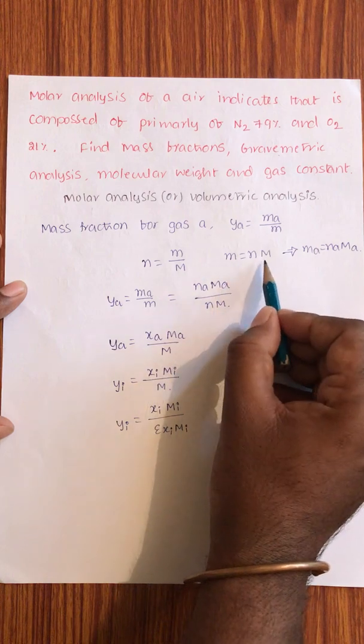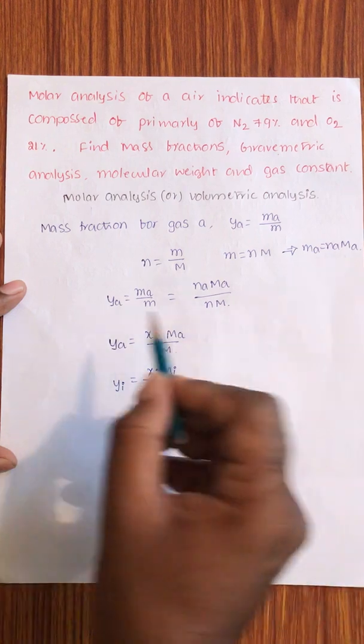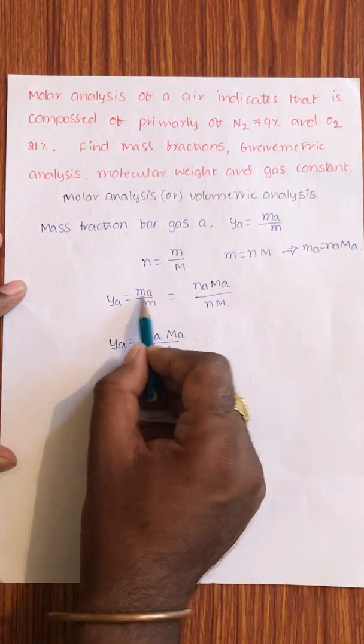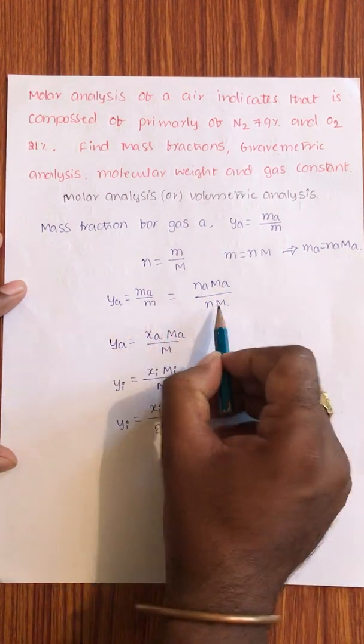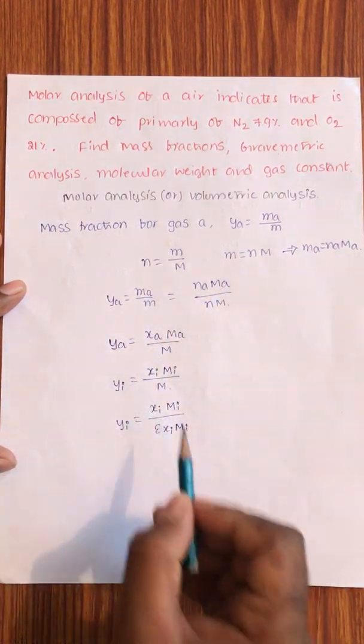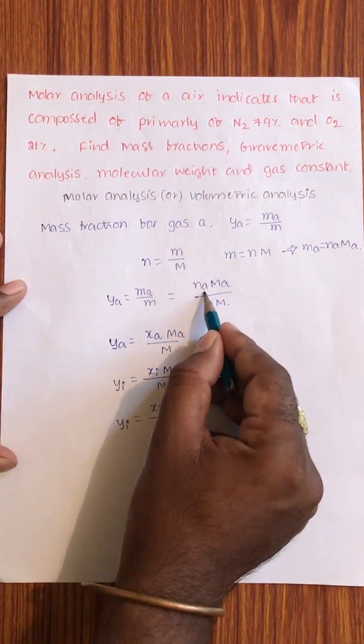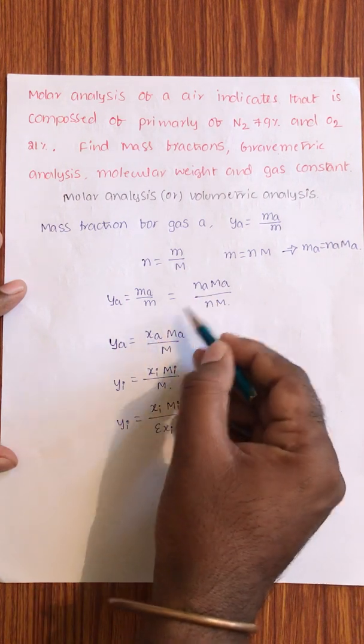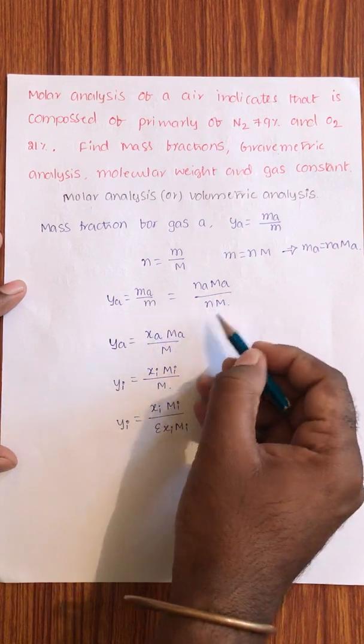This is for the mixture. If I write for gas A, MA equal to NA MA. So from this YA equal to MA by M. For gas A, MA means NA MA by M means NM. So YA equal to NA by N means XA, the mole fraction for gas A.